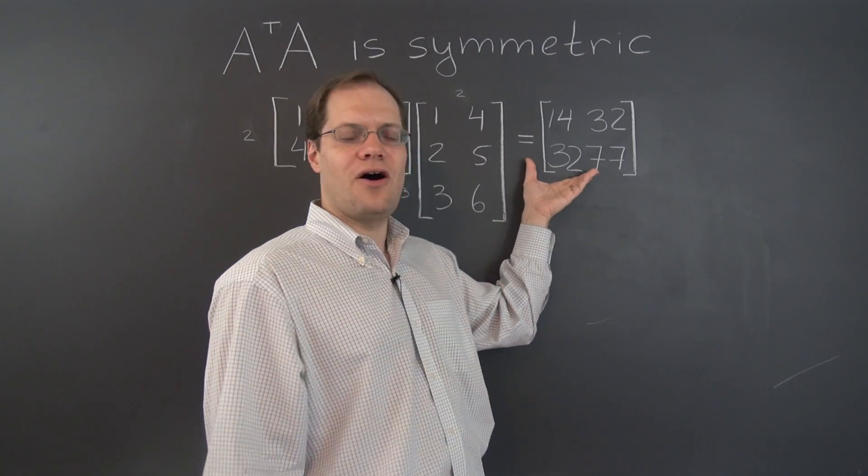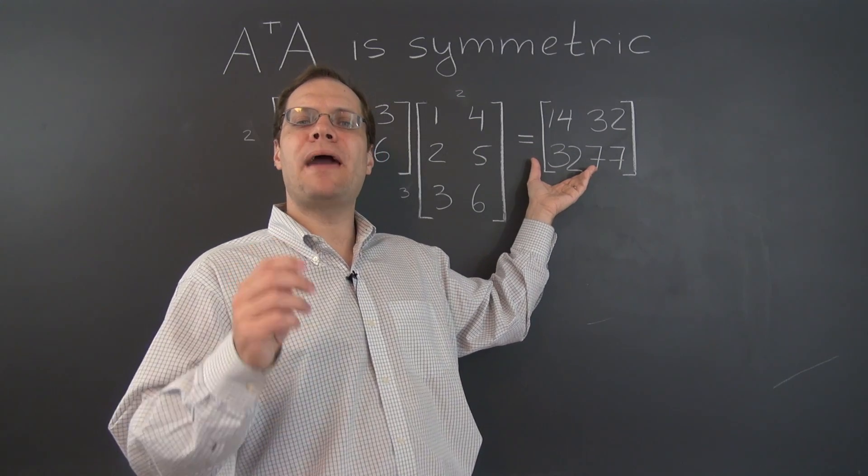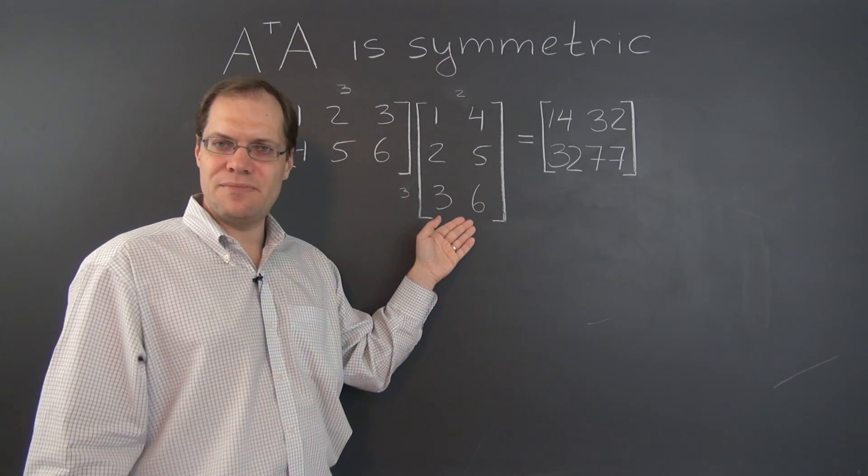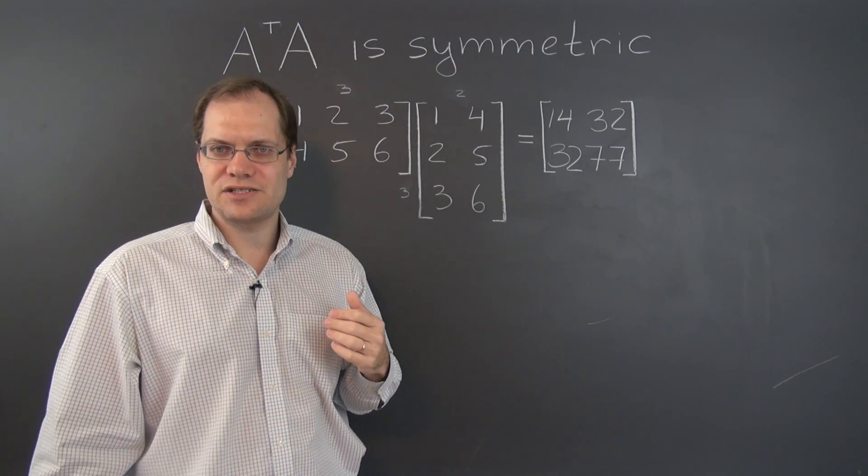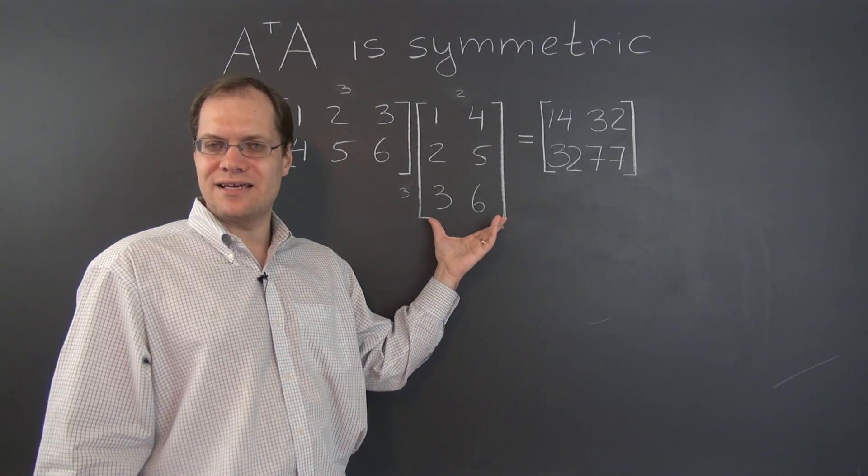Because they represent inner products of the columns of the matrix A. In fact, you can say that all of the entries of this matrix represent the pairwise dot products of the columns of the matrix A. Once again, you don't even have to look at the matrix A transpose. You can simply concentrate on the matrix A itself.